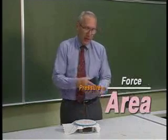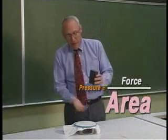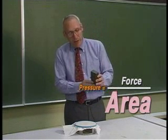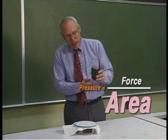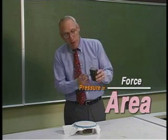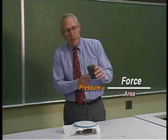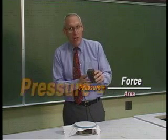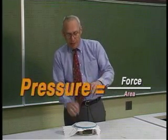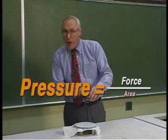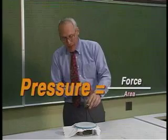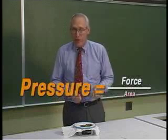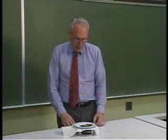But if you turn it over and ask the piece of paper to exert the same force — that is, to balance the weight of the steel — but to do it spread over the very, very small area, which is the area of the points of those three nails, then the pressure this time is very, very large. The force per unit area that the paper would have to exert in order to balance the weight of the piece of steel is an enormous value. And the paper is incapable of exerting that kind of pressure, so the object falls through the piece of paper.